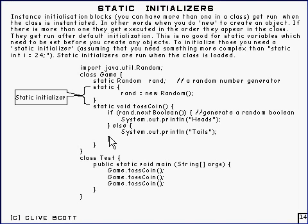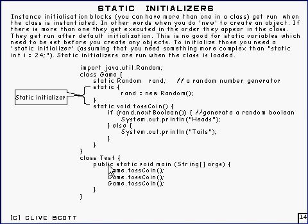This is an if statement, by the way. When we come to all these control statements, they're pretty trivial — exactly the same, really, as C. Here's a class that actually tests that, and all it does is call Game.tossCoin three times, and so we get heads or tails printed out three times.